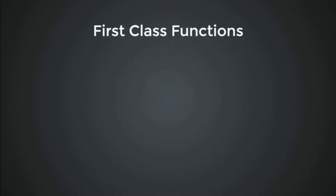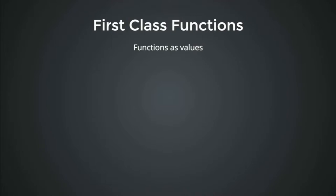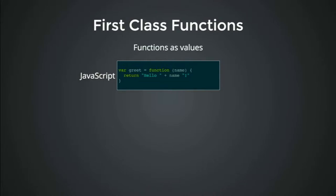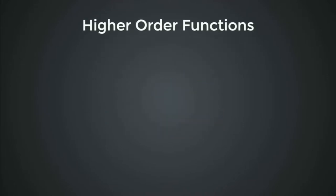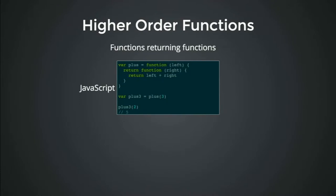First-class functions means your functions are values. In JavaScript you assign a function to the value of 'greet' — it's first class. In Java 8, which is actually useful now, you can assign it too: 'greet' as a lambda expression 'hello name' — it's a first-class object supported by your language. Higher-order functions are functions that return other functions. For example, in JavaScript we have a function called 'plus' which returns another function, where the actual addition logic lies.